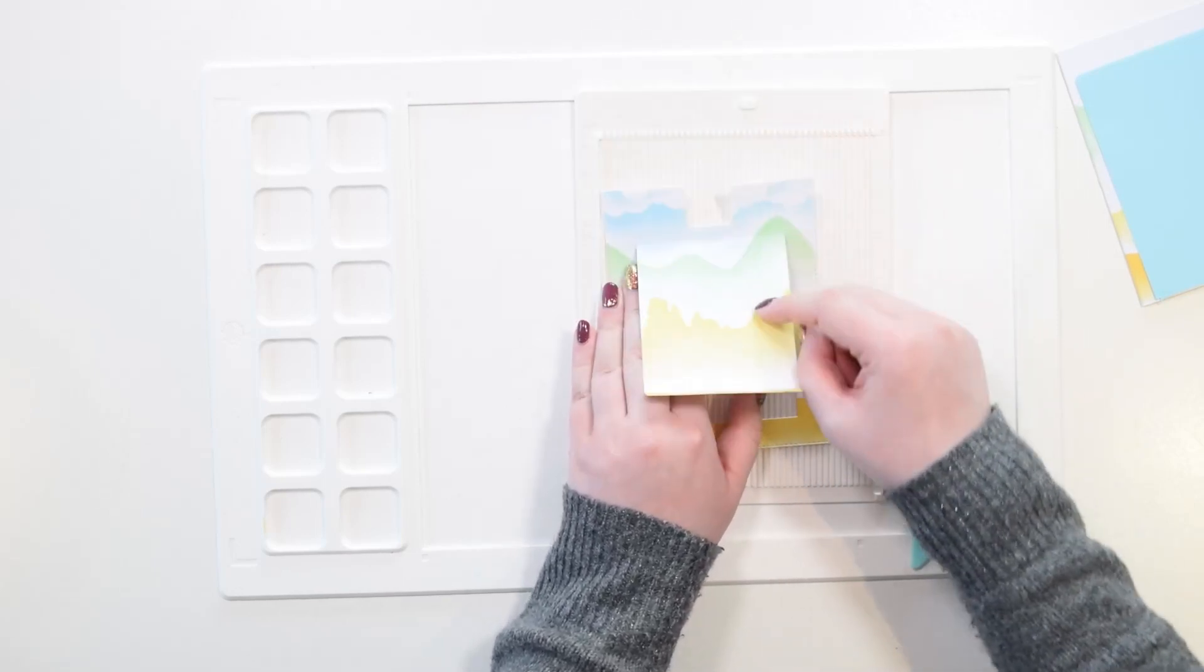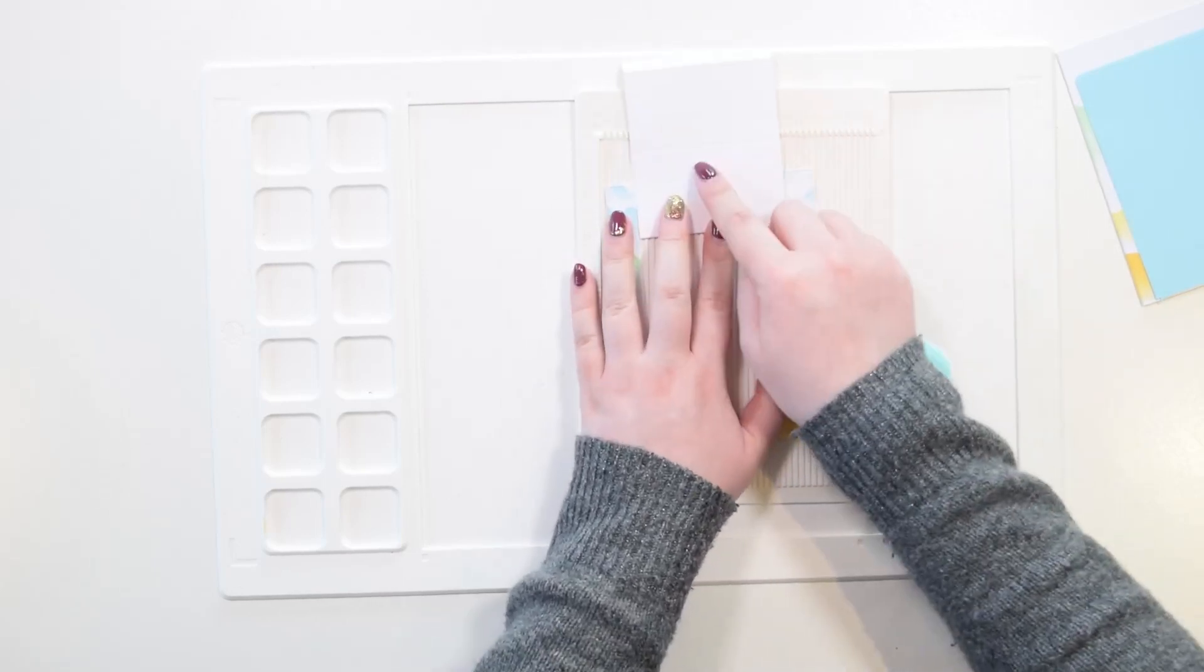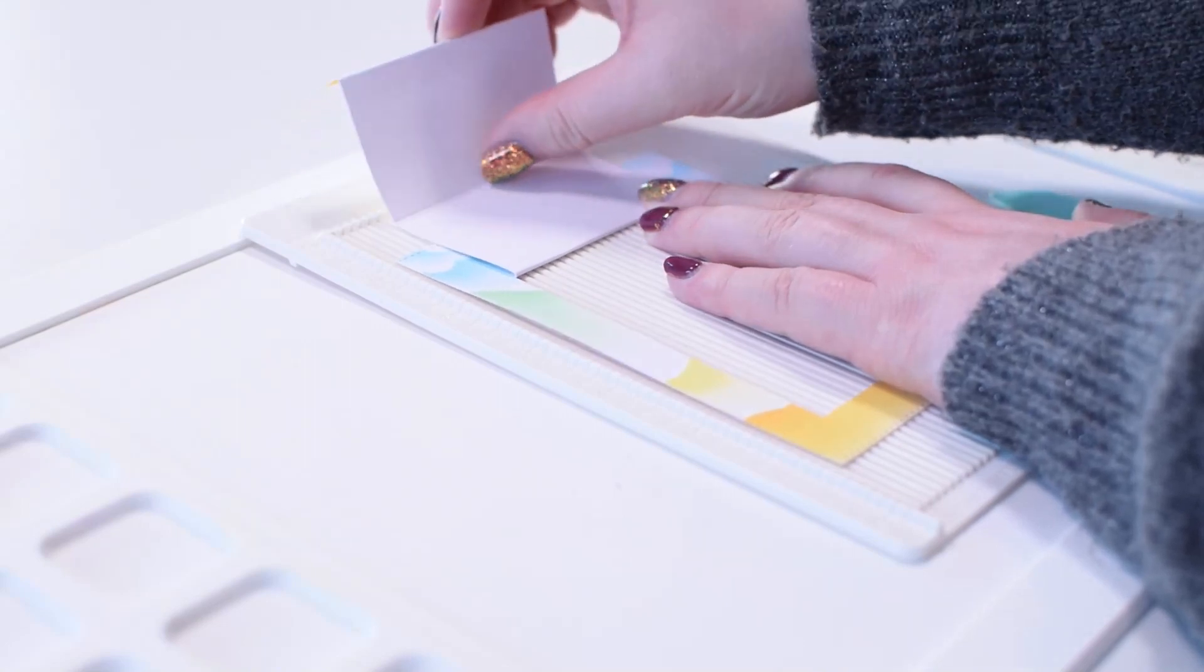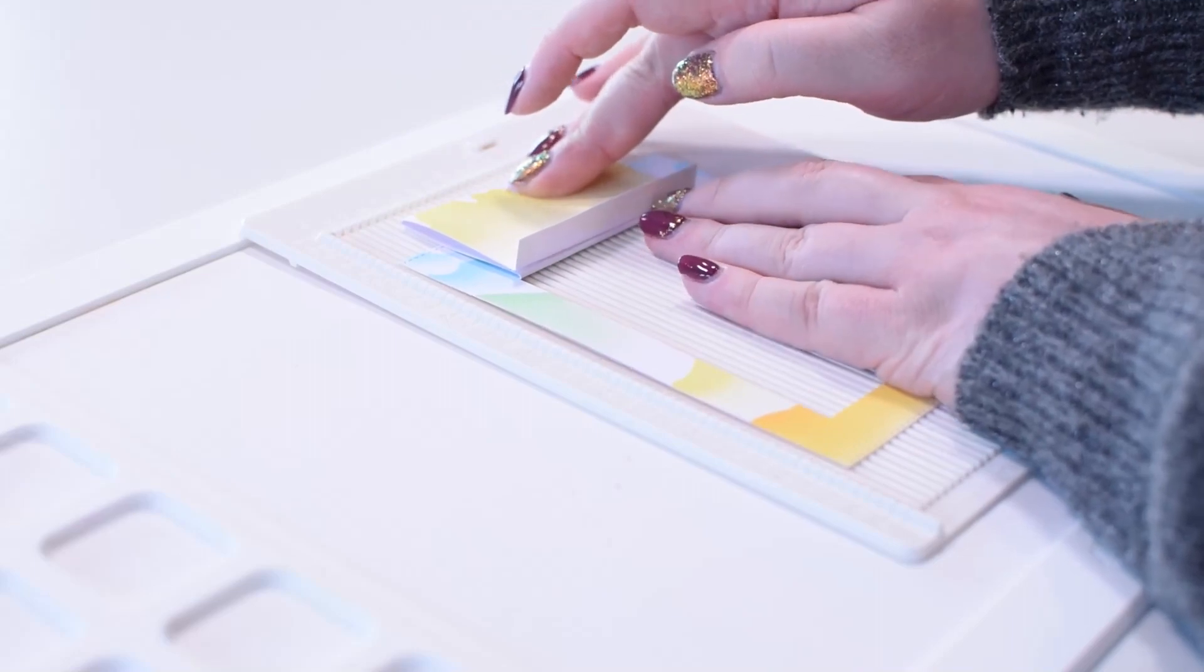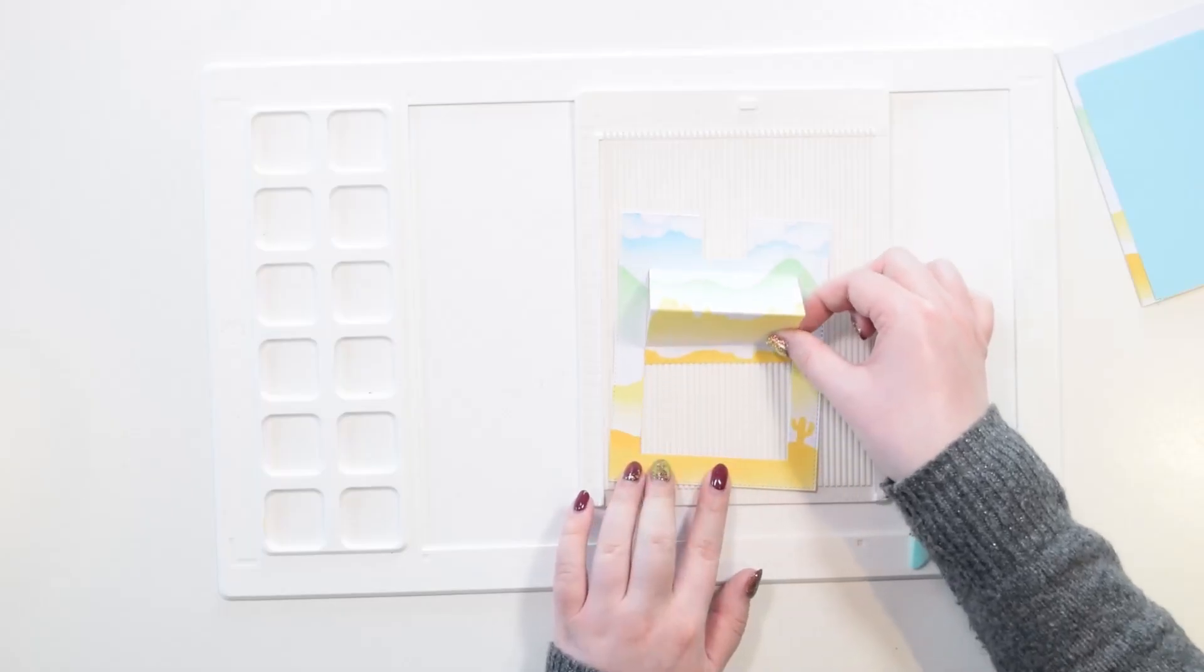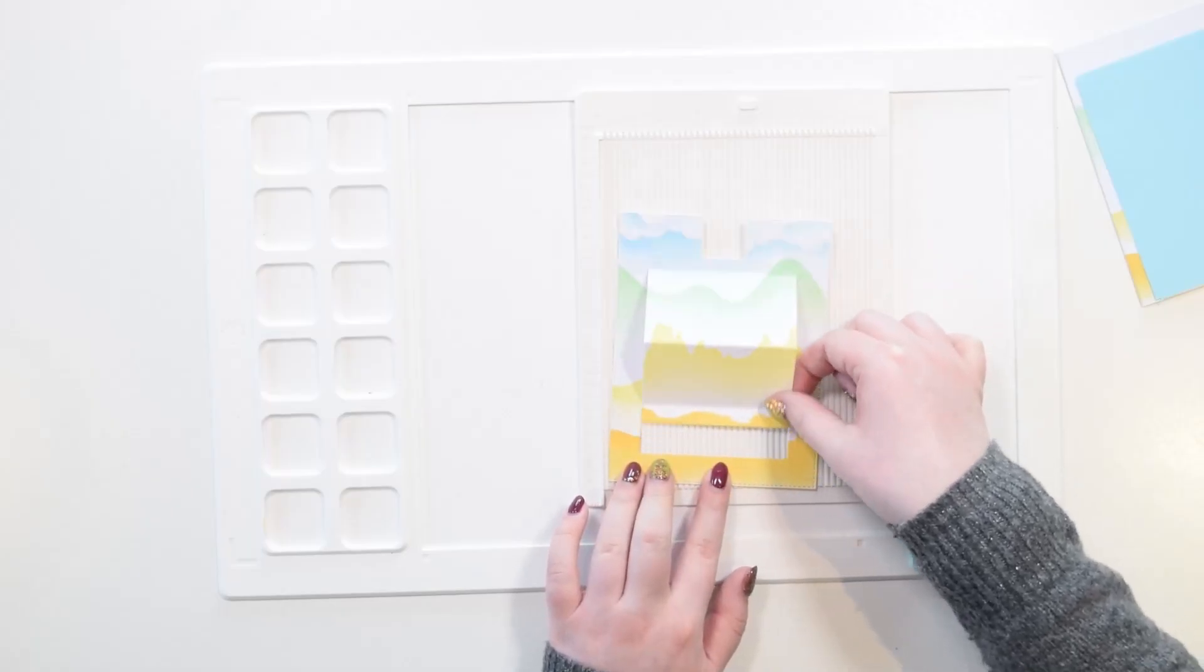Next, if you gently flip the panel all the way to the top, you can crease again along this top crease line. Then with this top panel flipped all the way up, you can just pull it back down along the middle, and that will crease it along the middle line, and now you have your slider mechanism.